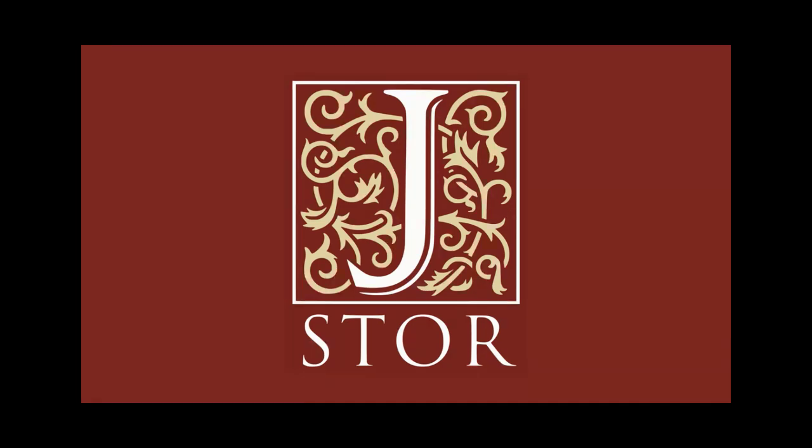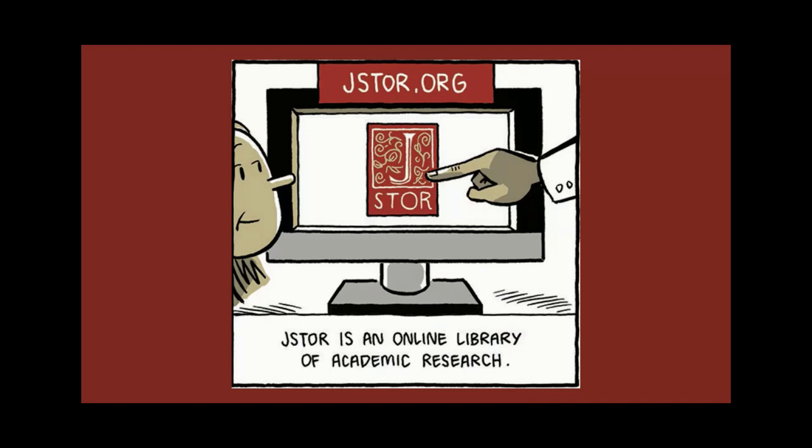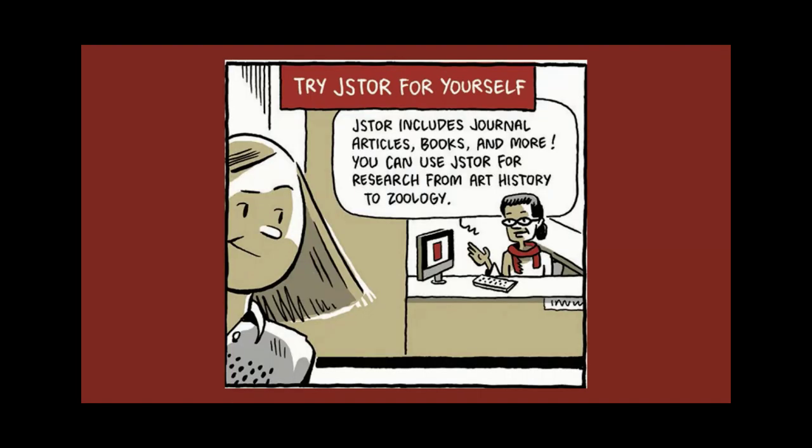JSTOR provides access to thousands of scholarly journal articles and is a great place to find sources for a variety of research questions. Unlike subject-specific databases like CINAHL or Business Source Complete, you can use JSTOR to search for articles that might fall under a variety of topics. This video will help you use JSTOR to search for scholarly journal articles.